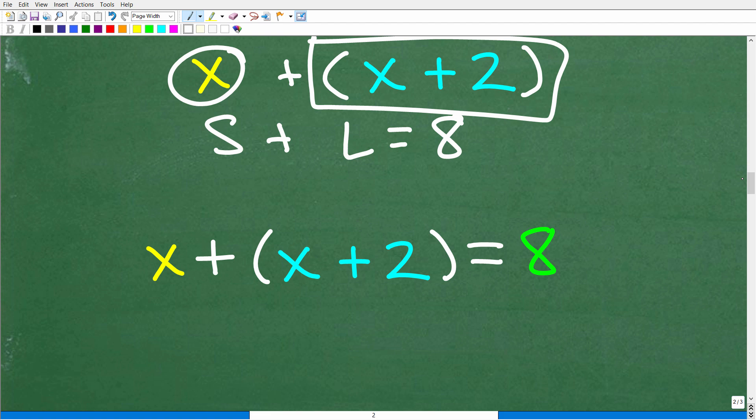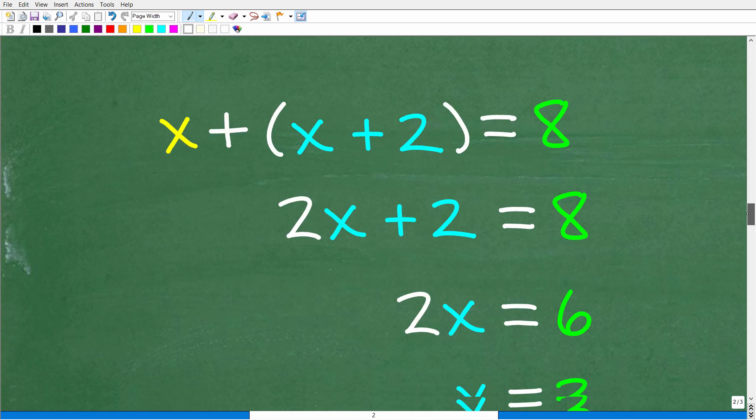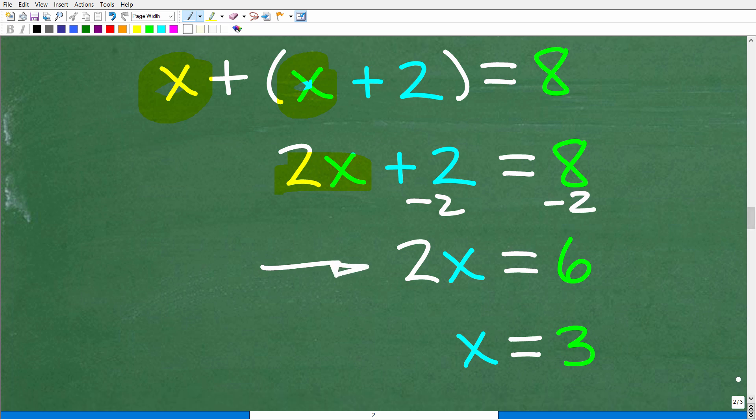Okay, so X plus X plus 2 is equal to 8. Not a difficult equation to solve. Let's go ahead and solve it right now. Okay, so the first thing that we're going to do is add like terms. So we have X and X, that's 2X. So we have 2X plus 2 is equal to 8. Then we're going to go ahead and subtract 2 from both sides of the equation. So we have 2X is equal to 6. And to solve for X, all we have to do is divide both sides of the equation by 2. So 6 divided by 2 is 3. So X is equal to 3.